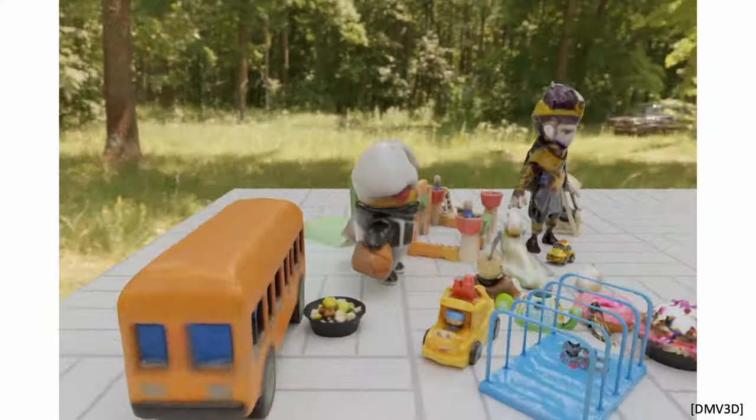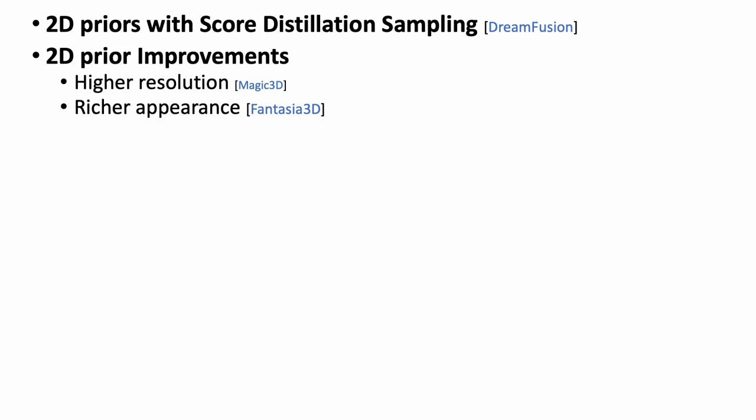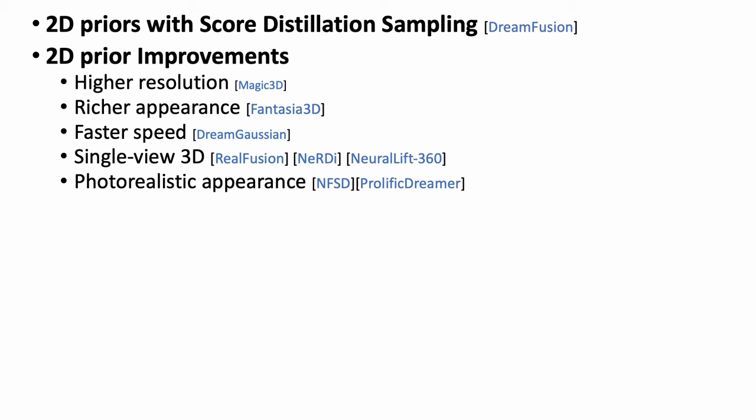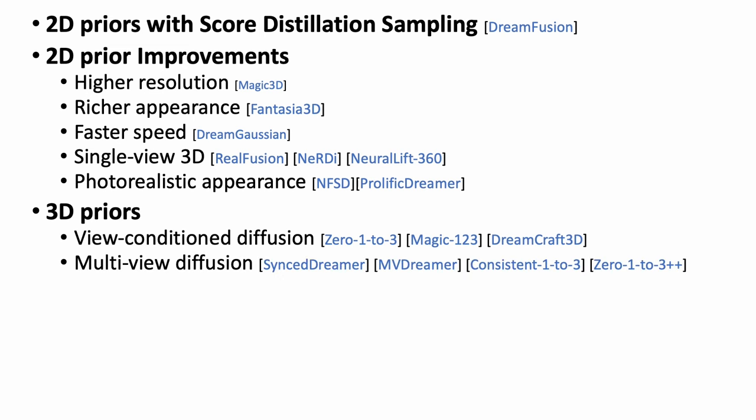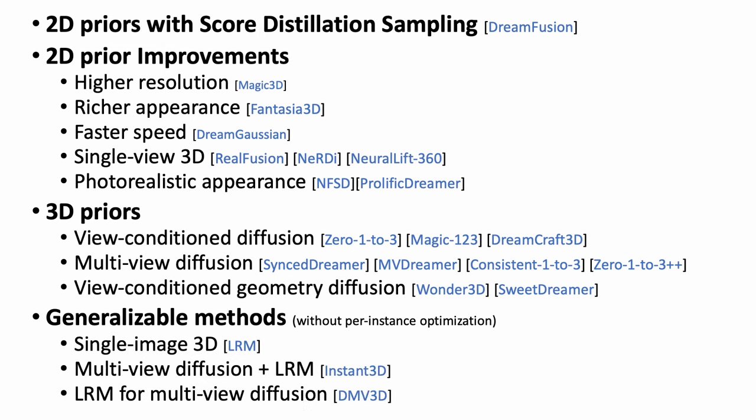In summary, we have seen rapid progress in 3D content generation. We first leveraged 2D priors from pre-trained diffusion models using SDS. We then improved the method to achieve higher resolution, richer appearance, faster training speed, single view 3D, and photorealistic appearance. The 3D priors can be learned from predicting one novel view, multiple novel views, and associated geometry information like surface normal. We also start seeing more efforts in building generalizable models using transformer, and integrating it with the diffusion model. It's a super exciting research topic with many practical applications. I can't wait to see even more progress in the next year.